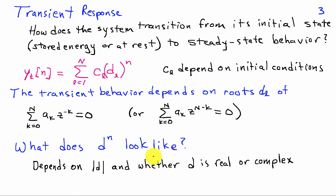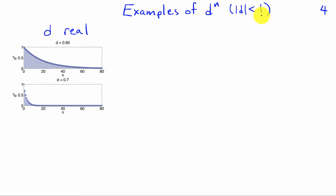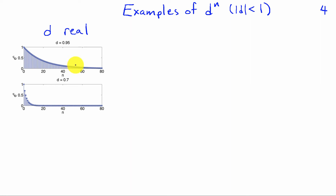The question is: for some constant d, what does d^n look like? The answer depends on the magnitude of d. If the magnitude of d is greater than 1, d^n grows to infinity — that's an unstable system. For d^n to decay, the magnitude of d must be less than 1. Choosing d = 0.95 gives a decaying exponential; d = 0.7 decays considerably faster. The magnitude of d tells us how fast the term decays.